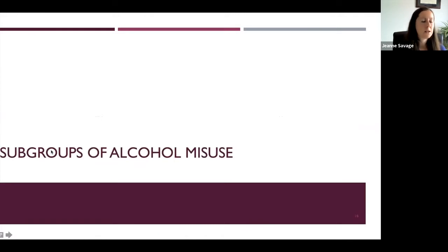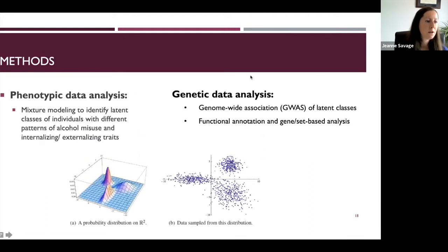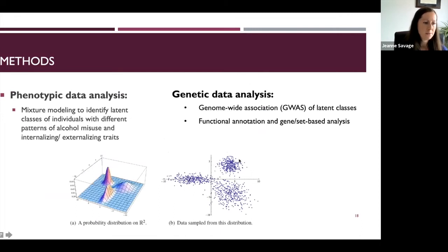The second analysis takes a different approach and looks at subgroups of individuals with alcohol misuse. Again using UK Biobank data, we examined a variety of measures related to alcohol use and misuse, as well as internalizing and externalizing psychopathology, to empirically validate the longstanding typology of internalizing versus externalizing alcoholics — which has existed since the 1970s and 80s. We applied mixture modeling to group individuals based on their similarity in patterns of item endorsement and disorder prevalence.